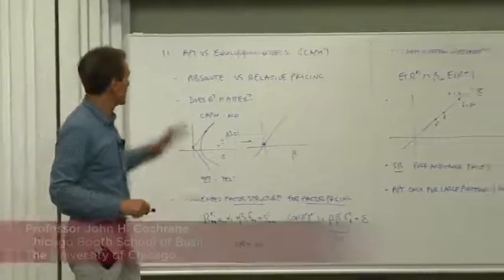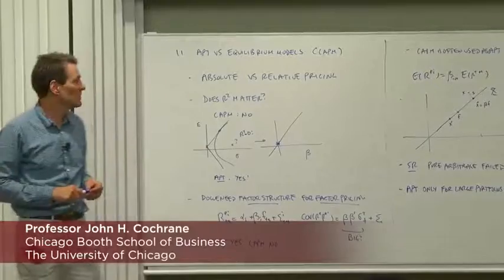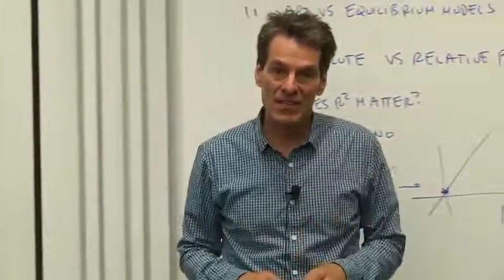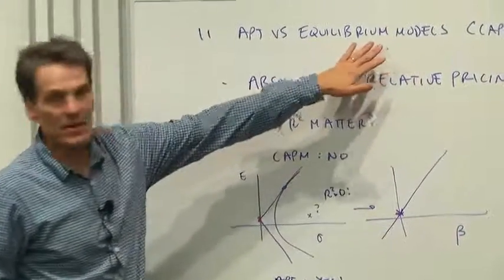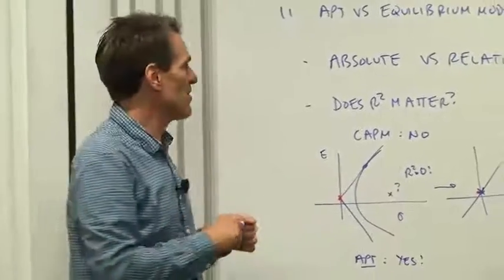So let's talk about the difference between the APT and equilibrium models, such as the capital asset pricing model. They come from a very different philosophy. The capital asset pricing model and equilibrium models, in a sense, try to be very, very powerful. They're what I call absolute pricing models.